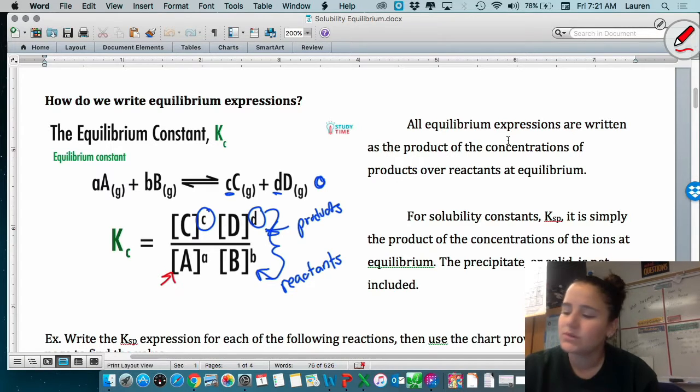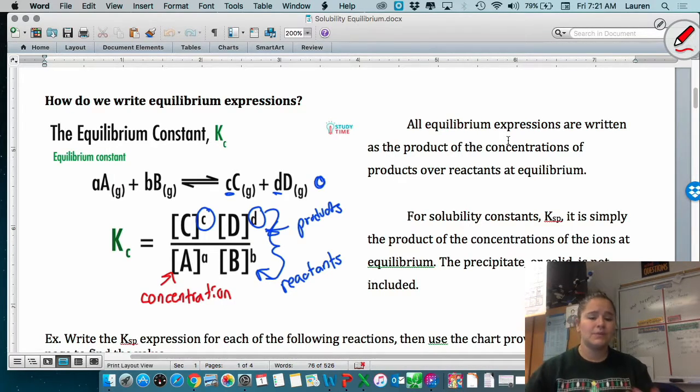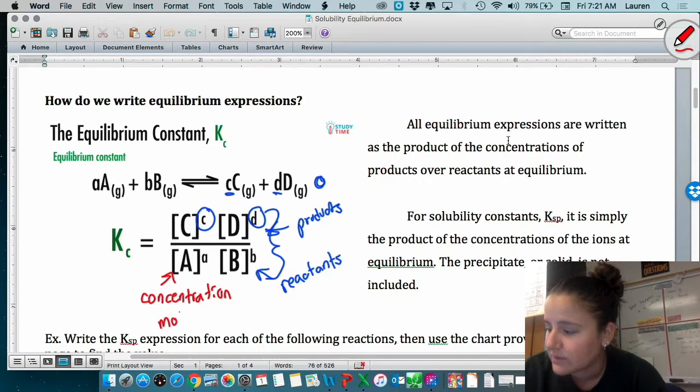And the coefficients here become exponents here. This is what it always looks like. And also, these square brackets, in case you don't remember, they mean concentration. And whenever we're doing concentration, it is always going to be the molarity or the moles per liter.